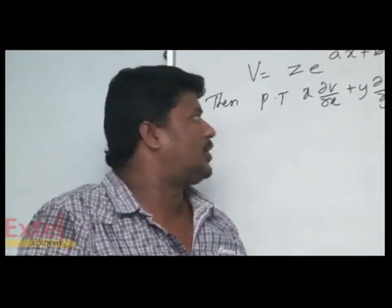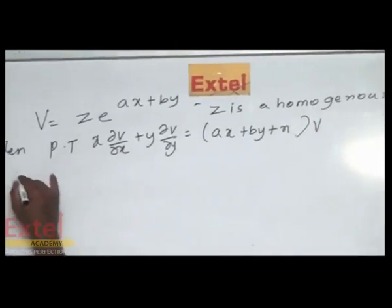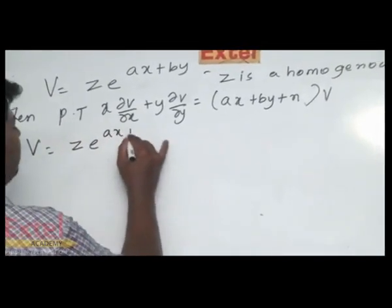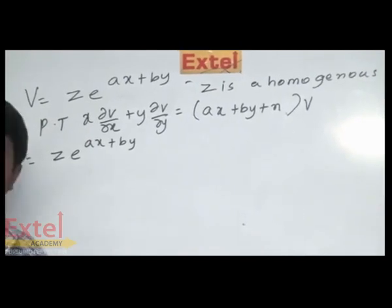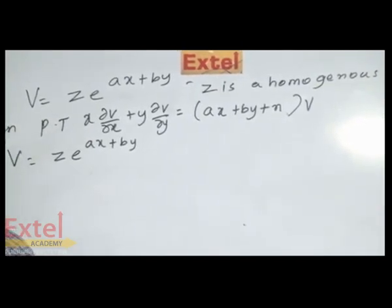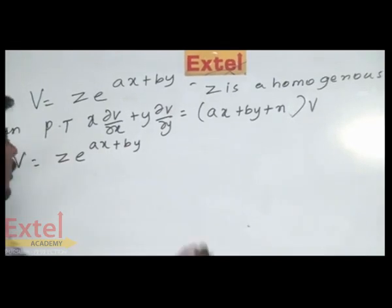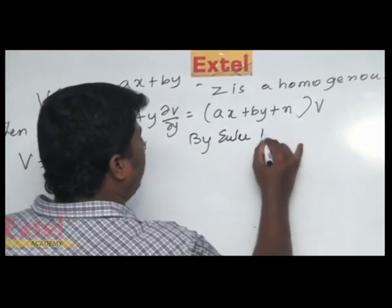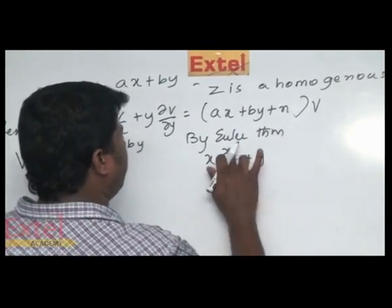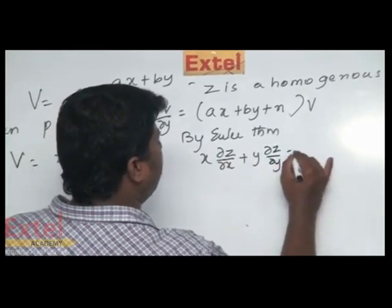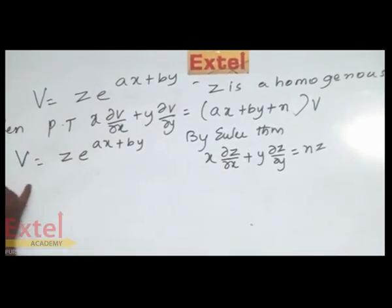It is given that v = z·e^(ax+by), and z is a homogeneous function of degree n in x and y. By Euler's theorem, if f is a homogeneous function of degree n in x and y, then x·∂f/∂x + y·∂f/∂y = n·f. Since z is a homogeneous function, by Euler's theorem we can say x·∂z/∂x + y·∂z/∂y = n·z.